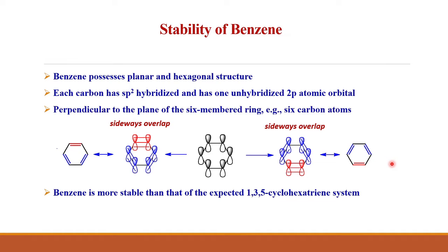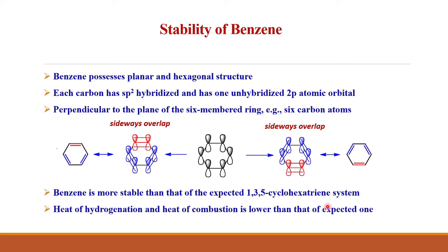They are in equilibrium and cannot be separated. That means benzene is more stable than the expected 1,3,5-cyclohexatriene system, which is a hypothetical structure. The stability of benzene can be explained using the data from heat of hydrogenation and heat of combustion. Benzene has a lower heat of hydrogenation and heat of combustion than that of the expected 1,3,5-cyclohexatriene system.